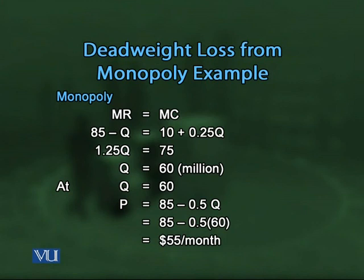Using the profit maximizing level Q = 60, we substitute into the price function P = 85 − 0.5Q and get P = $55 per month. Comparing the two markets: under competitive market, 100 million customers were served at $35/month; under monopoly, this reduces to 60 million customers at $55/month. The monopoly results in lower quantity and higher price.